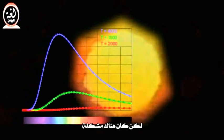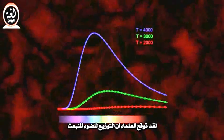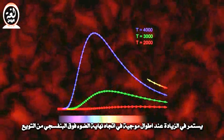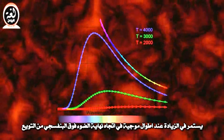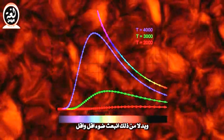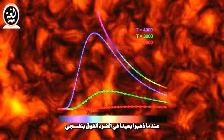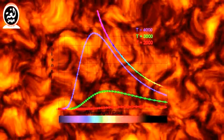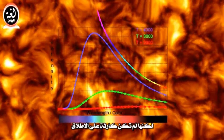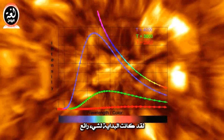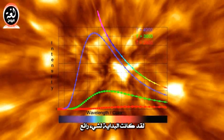But there was a problem. The scientists expected the distribution of emitted light to continue to increase at wavelengths toward the ultraviolet end of the distribution. It didn't. Instead, there was less and less light given off as they went further and further into the ultraviolet. This was called the ultraviolet catastrophe. But it wasn't a catastrophe at all — it was the beginning of something remarkable.